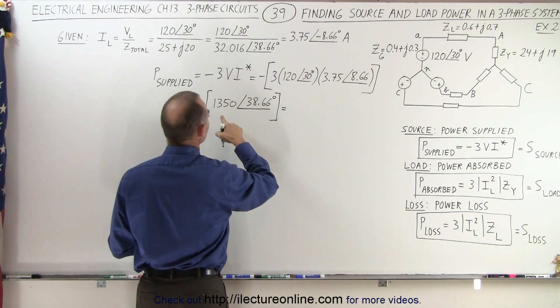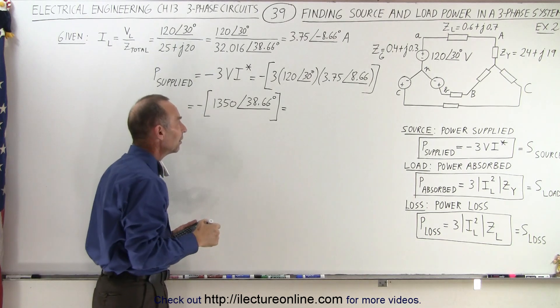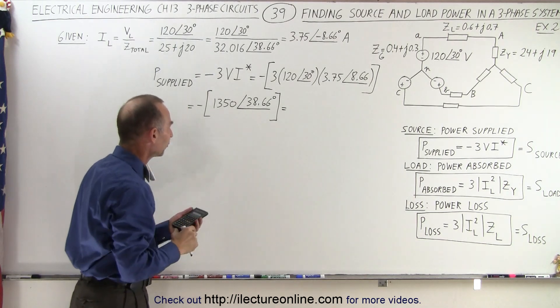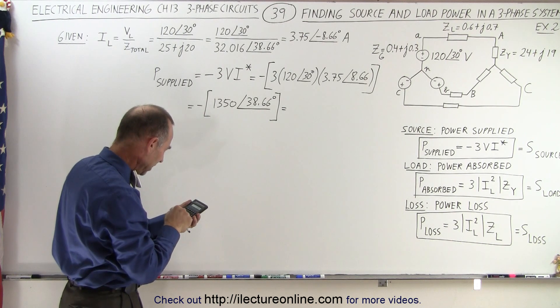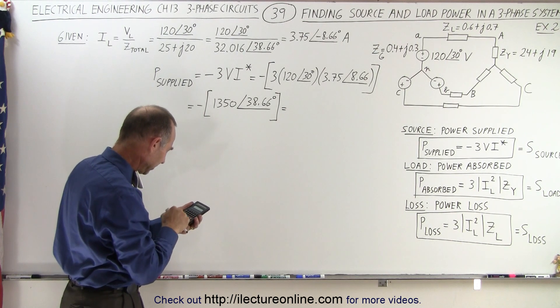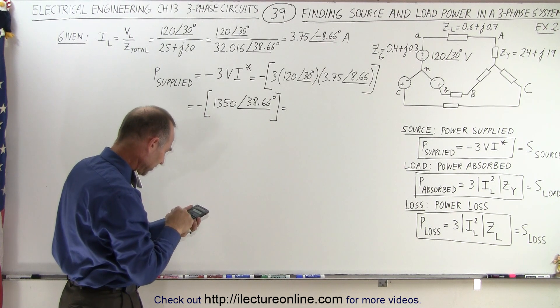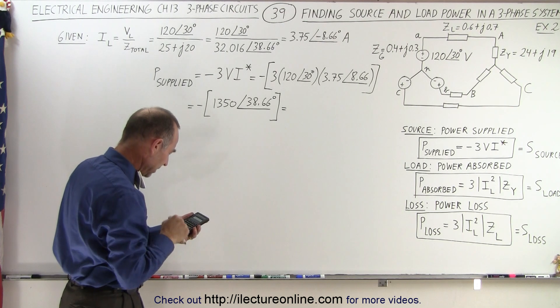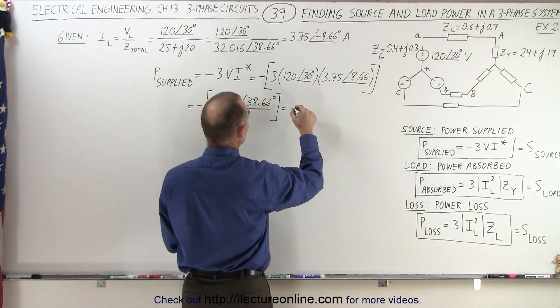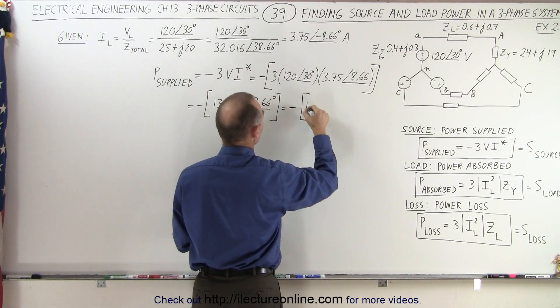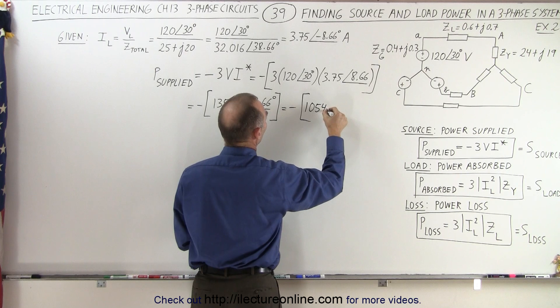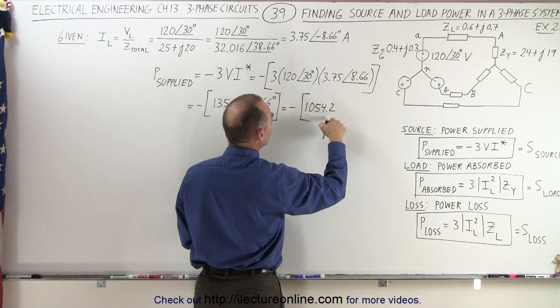And then if we want to find the magnitude and or the real and imaginary part format of that, so we multiply 1350 times 38.66, take the cosine of that. And that gives us 1054.2. Of course, we still need to have the negative here. So 1054.2, that is the real part.